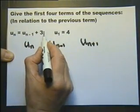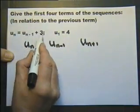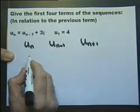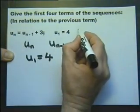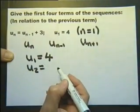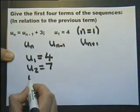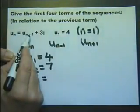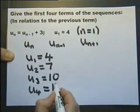This notation is saying: to get the next term, you add three to the previous term. The first term is four, so when n equals one, U_1 = 4. When n equals two, the second term, I add three to the previous term to get seven. The third term, n equals three, is seven plus three which is ten. The fourth term is therefore thirteen.